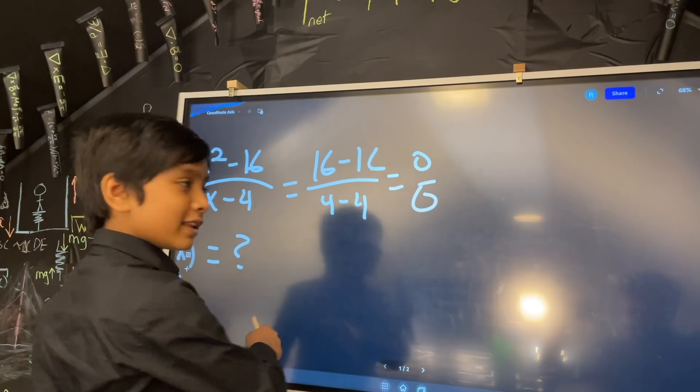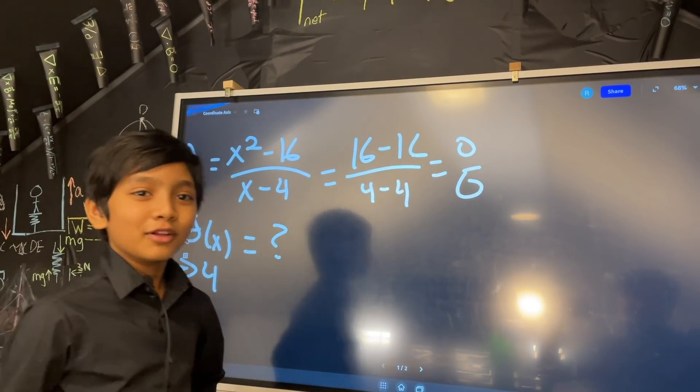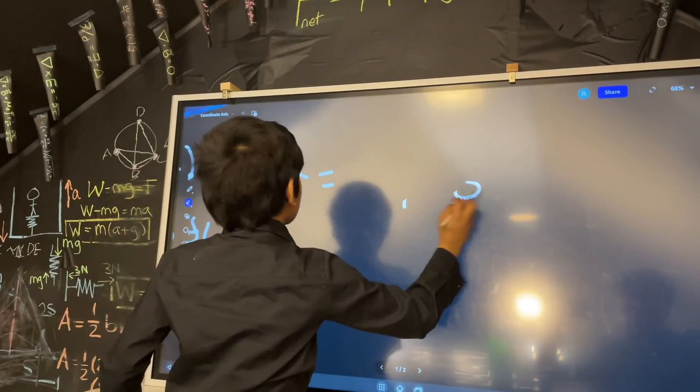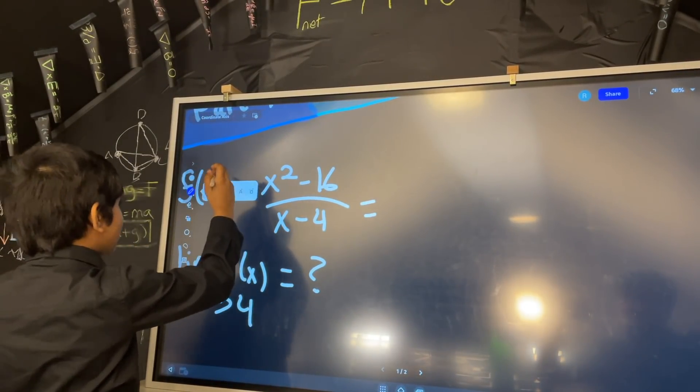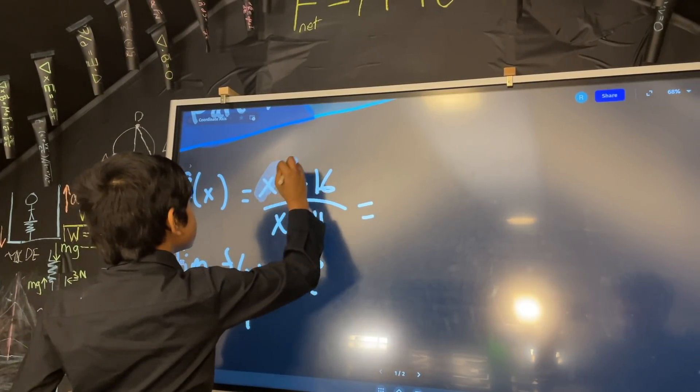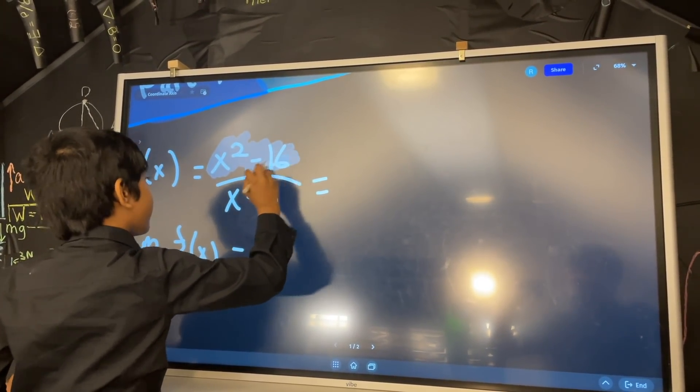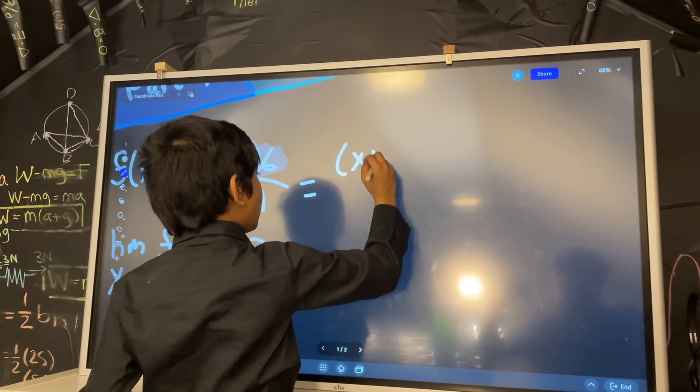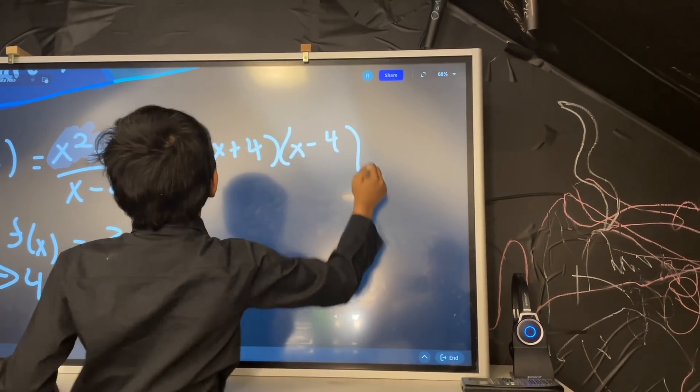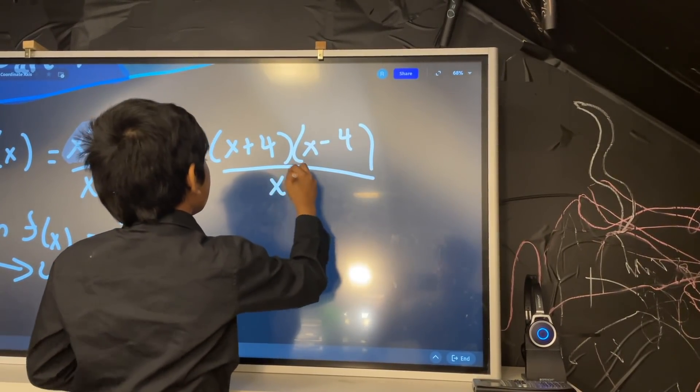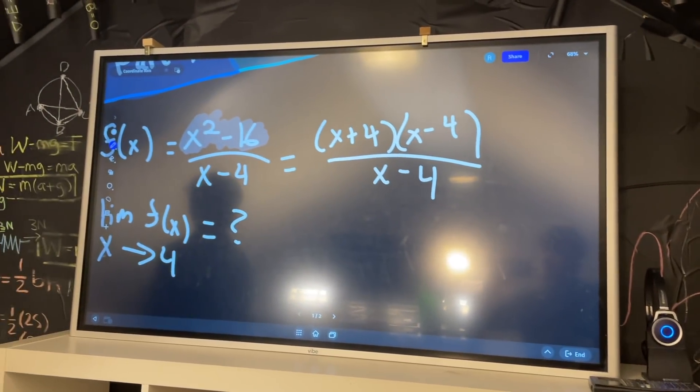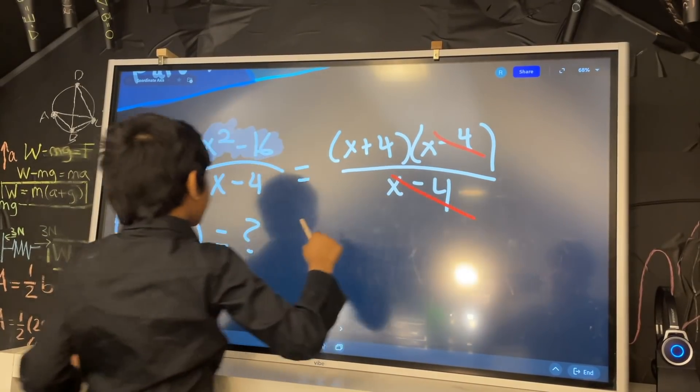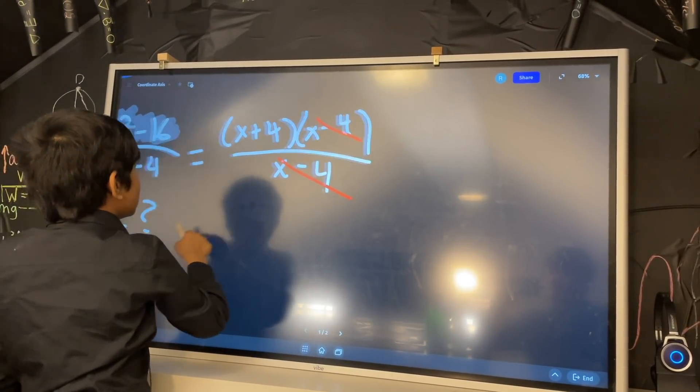But there is a way of solving this. Look very closely. This is actually a difference of squares. So when you factor this difference of squares, this is what it would give you: x plus 4 times x minus 4, and we divide that by x minus 4. What we can do next is cancel out x minus 4 and x minus 4 to get x plus 4.